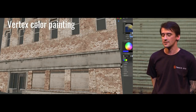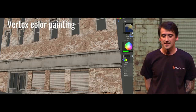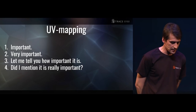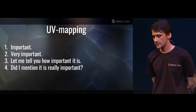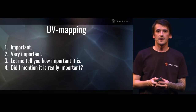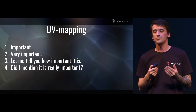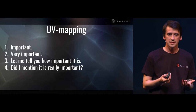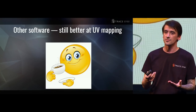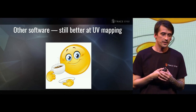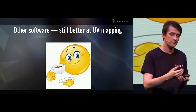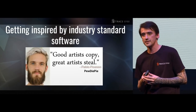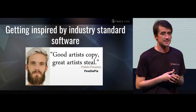I spoke so much about texturing and UV mapping simply because I want to stress how important UV mapping is. Naturally, the tools that allow you to do that have to be very robust. I have to say that tools for UV mapping in Blender are lacking at the moment, and objectively speaking, other industry standard software does this job so much better. How do we improve Blender?